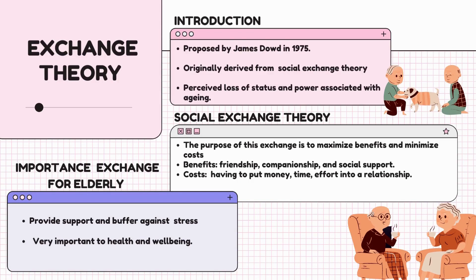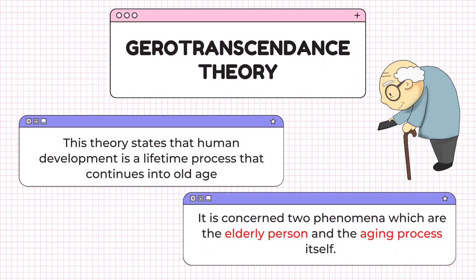Exchange theory was proposed by Dowd in 1975 and is originally derived from social exchange theory. Exchange theory perceives loss of status and power as associated with aging. The purpose of this theory is to maximize benefits and minimize costs. Benefits are things you get out of a relationship, such as fun, friendship, companionship, and social support, while costs involve things seen as negative, such as having to put money, time, and effort into a relationship. Positive social exchanges can provide support and buffer against stress, and support exchanges are very important to health and well-being.